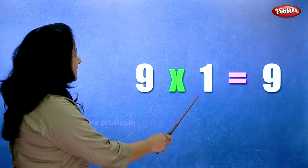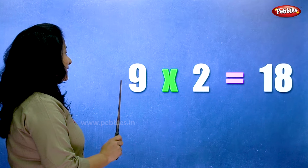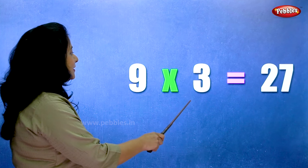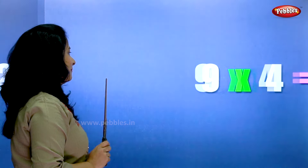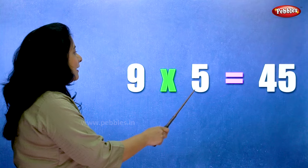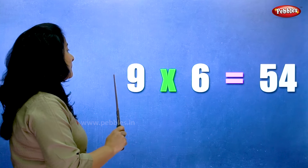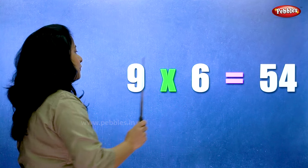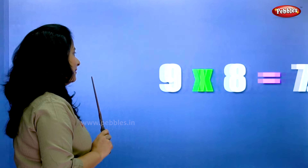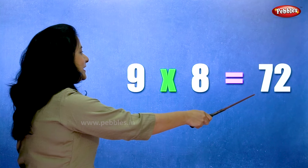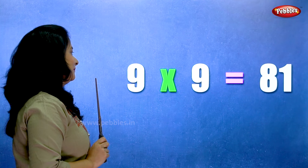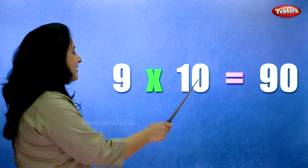Nine ones are nine. Nine twos are eighteen. Nine threes are twenty-seven. Nine fours are thirty-six. Nine fives are forty-five. Nine sixes are fifty-four. Nine sevens are sixty-three. Nine eights are seventy-two. Nine nines are eighty-one. Nine tens are ninety.